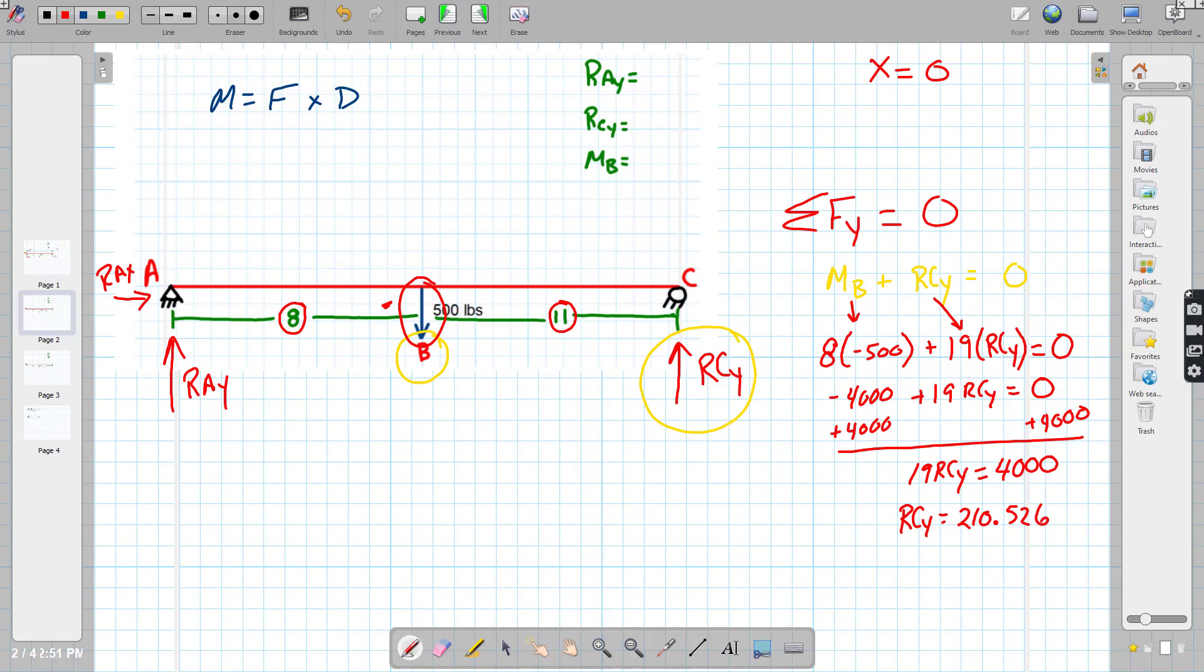All right? Now we know, though, right here, it says the sum of all forces in the Y direction has to equal zero. So what we're saying is we've got 500 pushing us down. And so far, we've only got 210.526 pushing us up. So what we're going to have to do, we've got to figure out what R-A-Y is going to be.